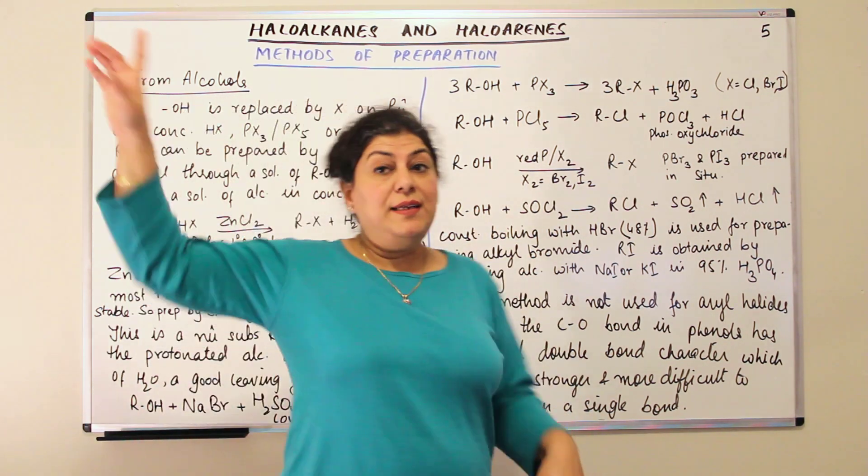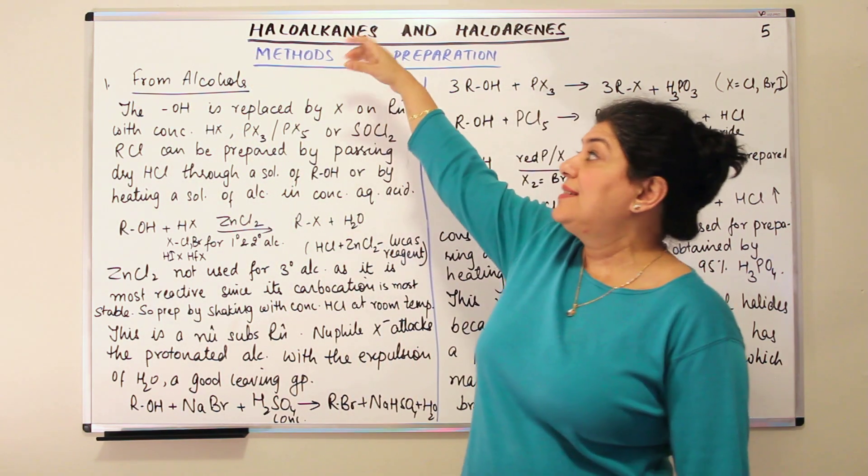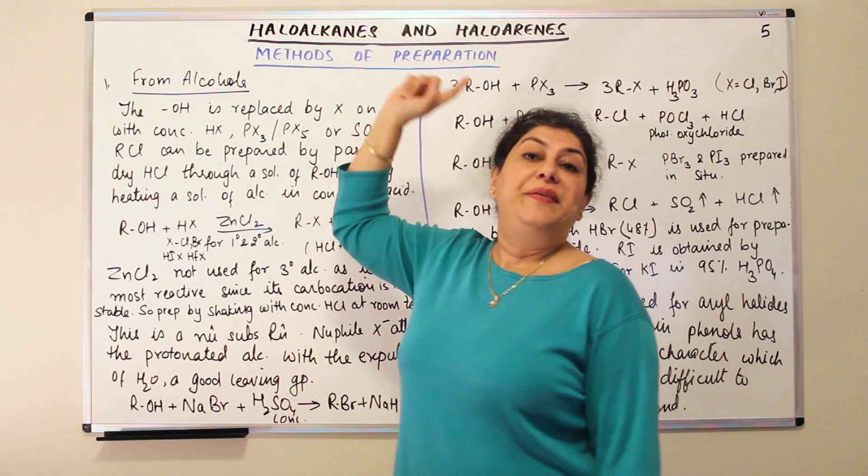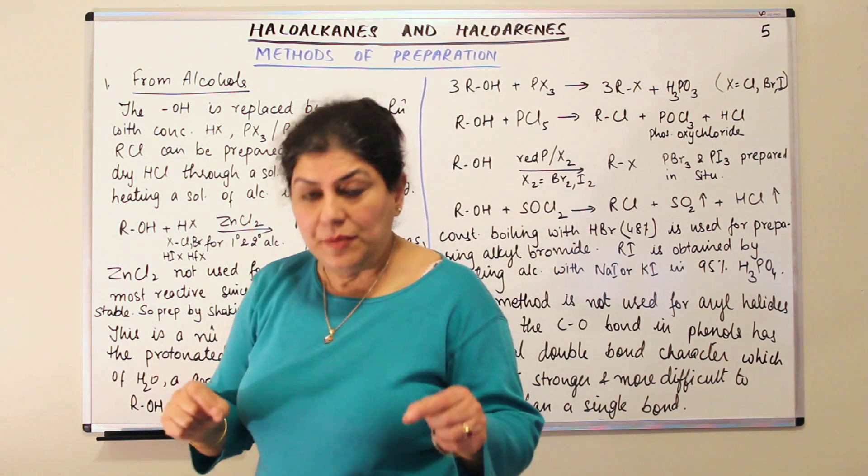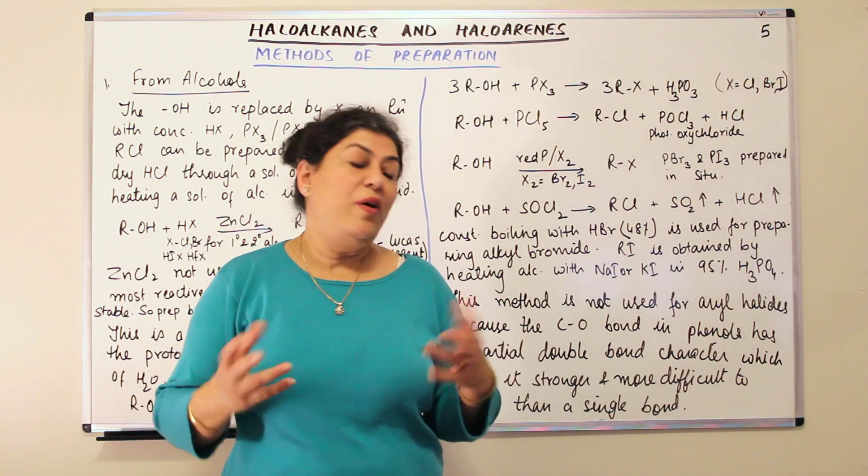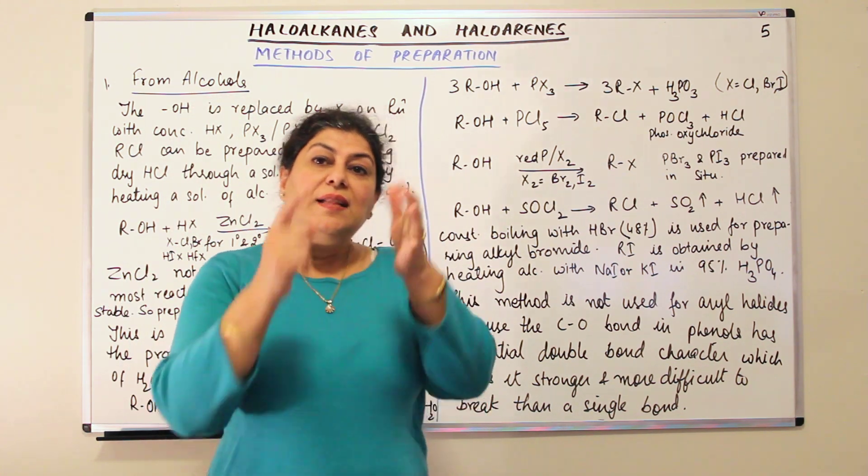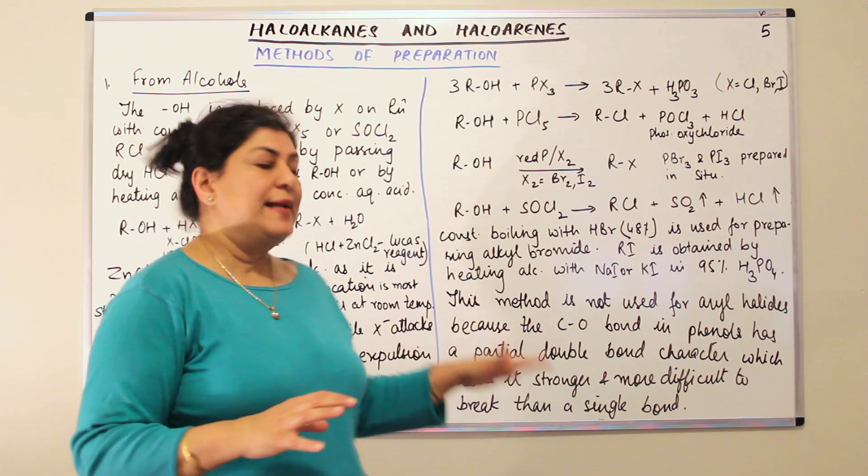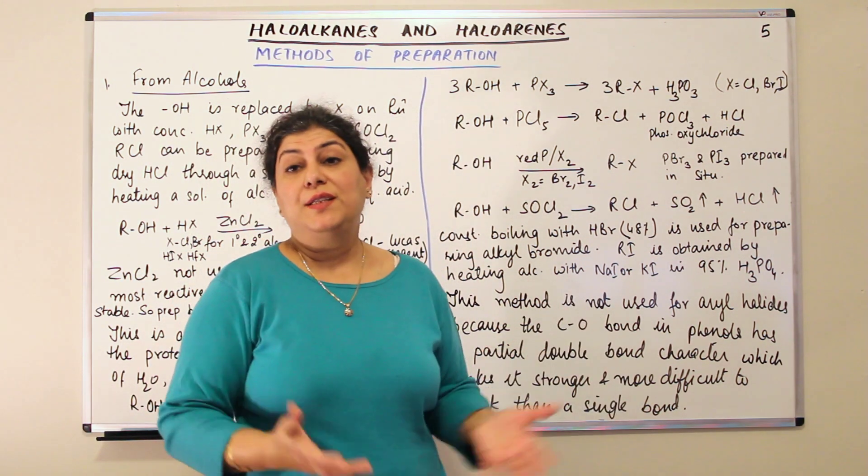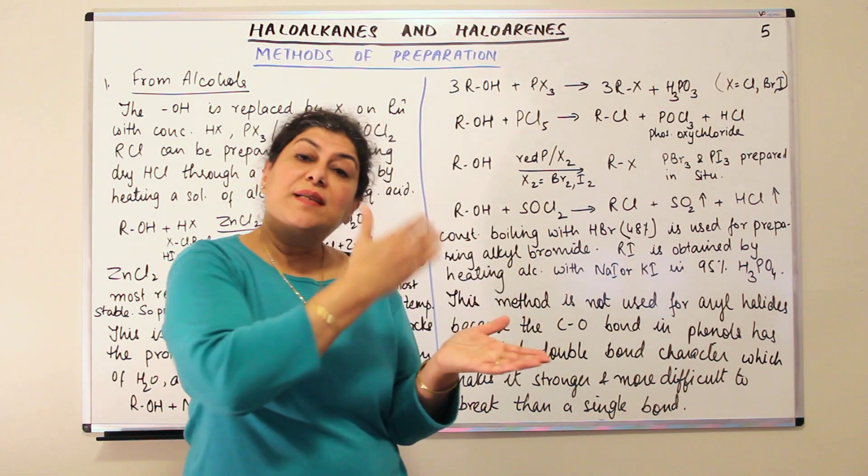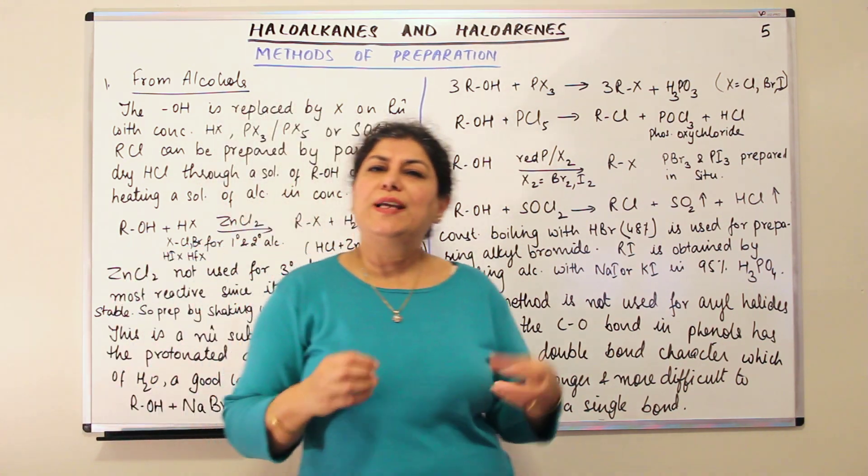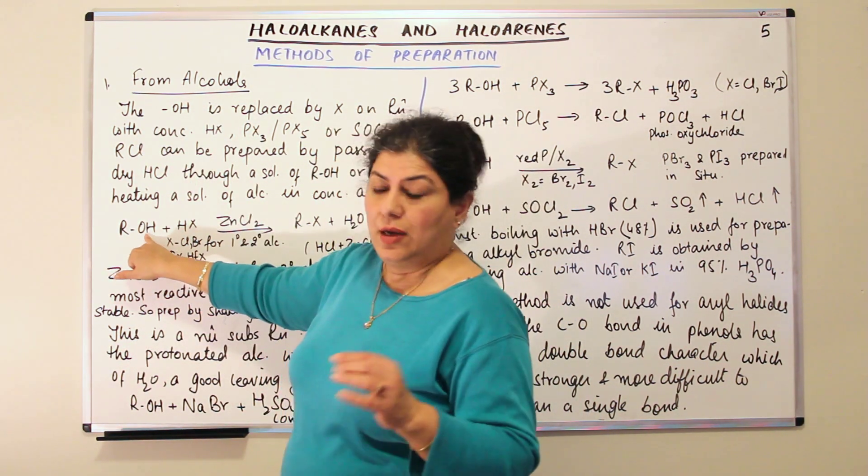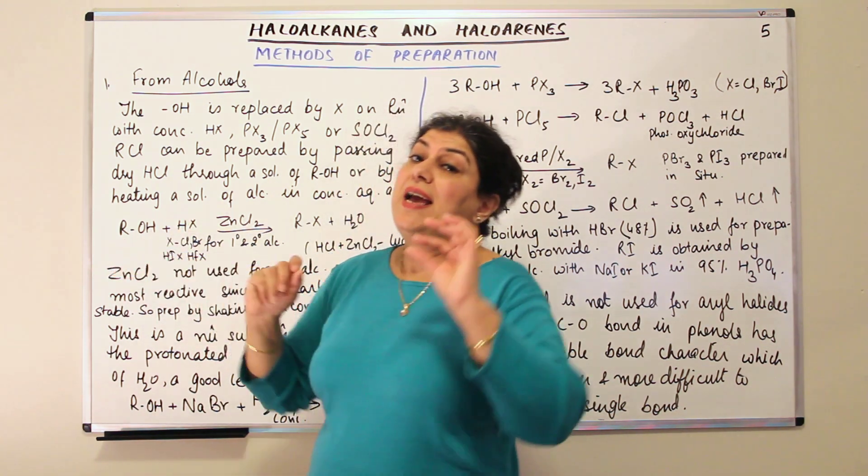This method, now, this method, which method are we talking of? The method of preparation of haloalkanes and haloarenes from alcohols. Remember when I started, I said, let us see how do we prepare haloalkanes from alcohols. Haloarenes are not prepared from alcohols. The reason being, or rather, this method is not used for aryl halides or haloarenes. Why? Because in haloarenes, the COH, the CO bond has a partial double bond character. You will understand this later when we study these topics more in details. But the CO bond has a partial double bond character. And a double bond is always stronger than a single bond. Therefore, even if we tried using these methods, the bond between the alcohol and, sorry, the alkyl group or the aryl group and oxygen has a partial double bond character.